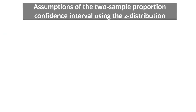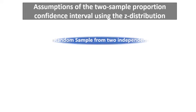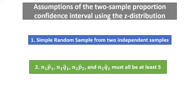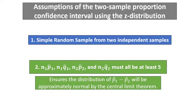In order to compute the two sample proportion confidence interval, there are two assumptions that must be met. You must have a simple random sample from each of the independent populations, as is the case for all confidence intervals we have looked at. Additionally, these four quantities — n1*p-hat1, n1*q-hat1, n2*p-hat2, and n2*q-hat2 — must all be at least five. This ensures that the distribution of p-hat1 minus p-hat2 will be approximately normal by the central limit theorem, which is required so that we can use the z-distribution.